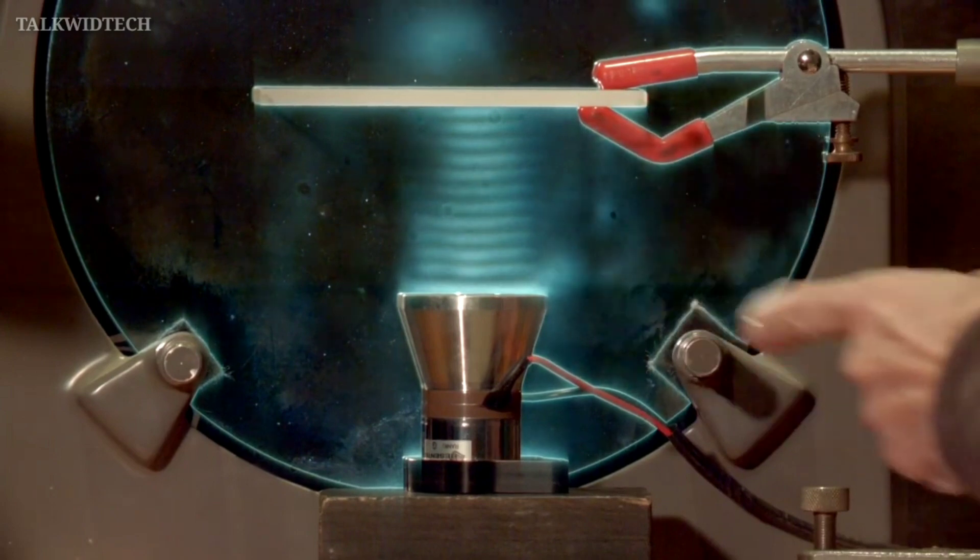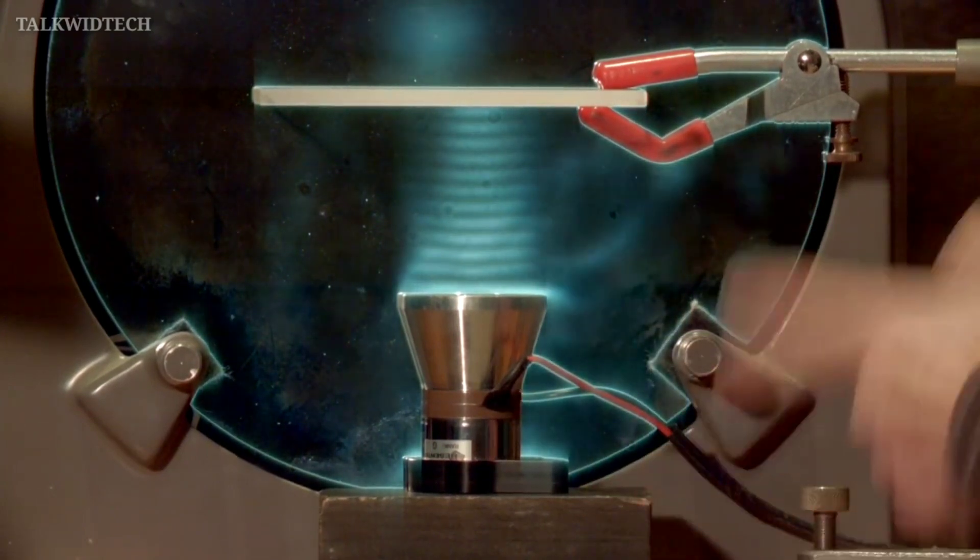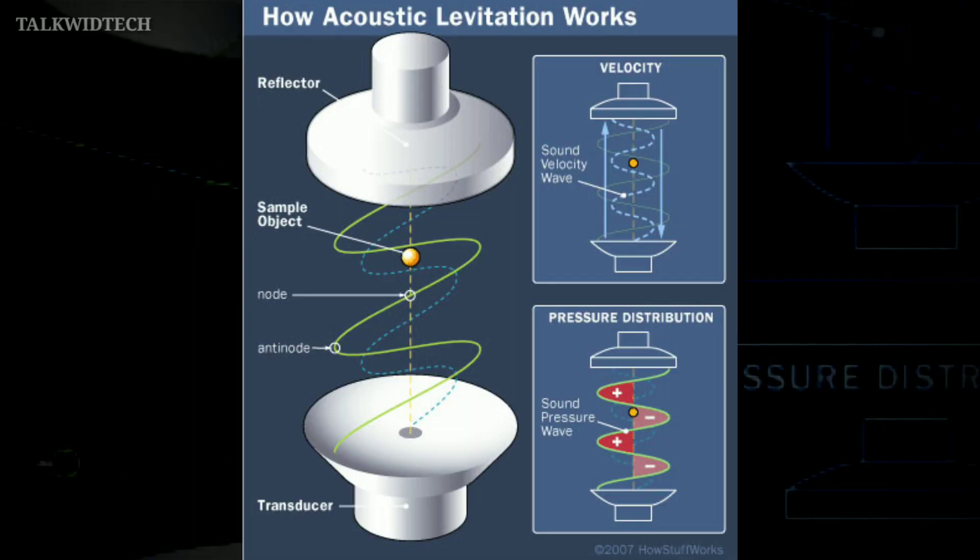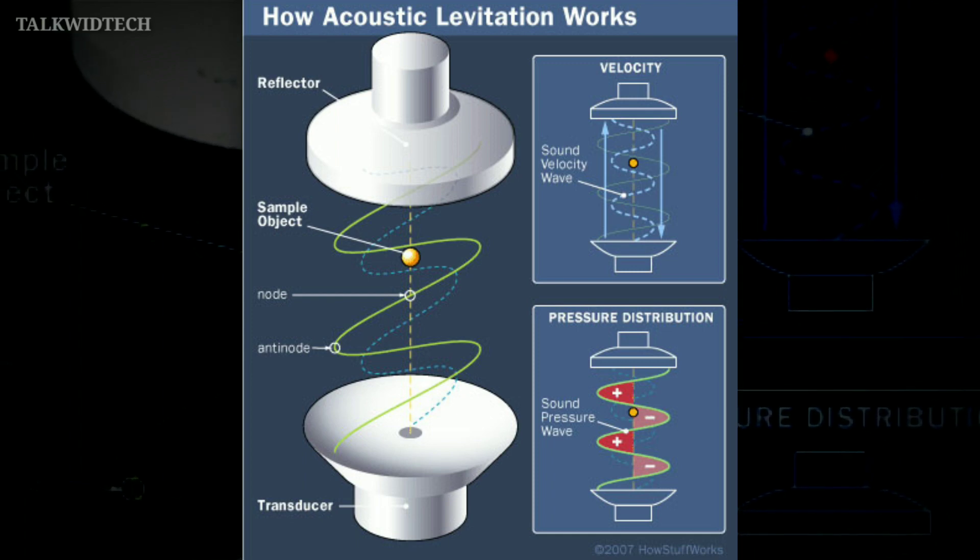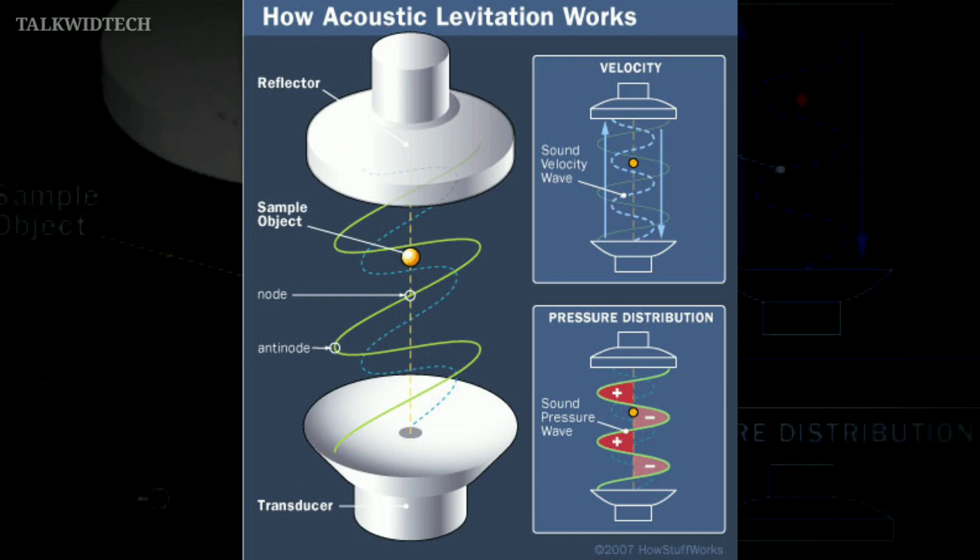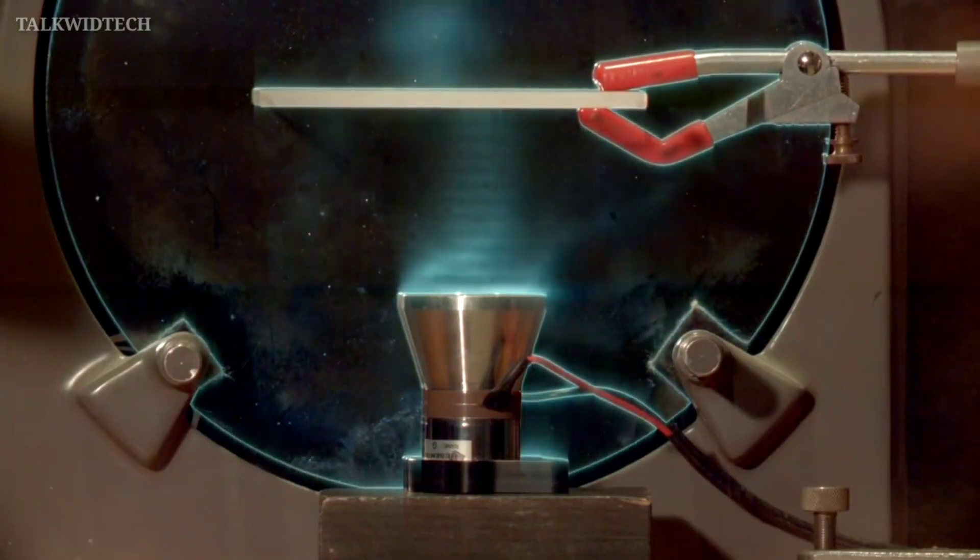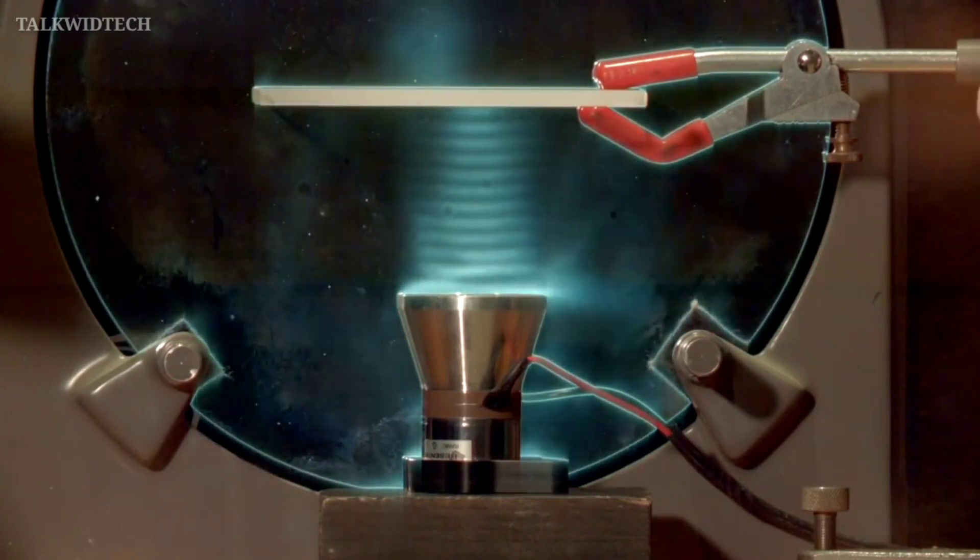The sound waves create frequencies not heard by the human ear. A basic acoustic levitator has two main parts: a transducer, which is a vibrating surface that makes sound, and a reflector. Often the transducer and reflector have concave surfaces to help focus the sound. A sound wave travels away from the transducer and bounces off the reflector.